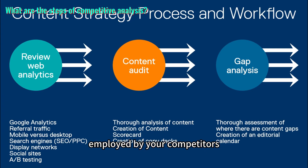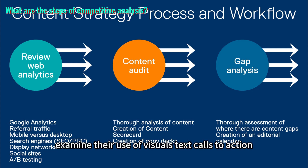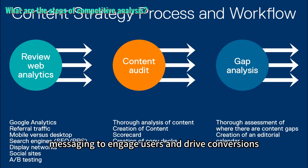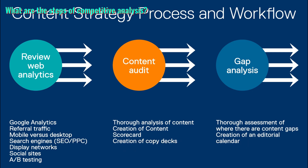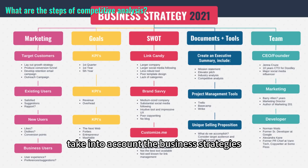Identify any unique or standout features that differentiate them from others. Step 6: Assess content strategy. Evaluate the content strategy employed by your competitors, including the clarity, relevance, and presentation of information. Examine their use of visuals, text, calls to action, and overall messaging to engage users and drive conversions.